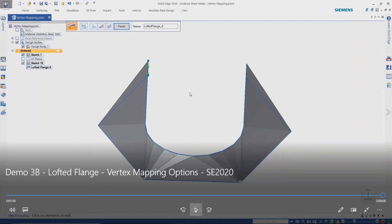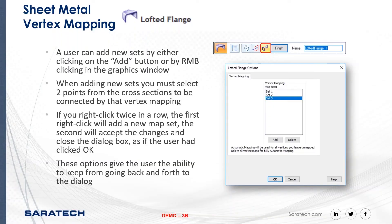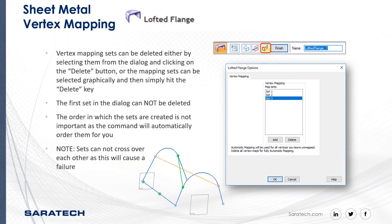The vertex mapping set can be deleted either by selecting it from the dialog or clicking the Delete button, as demonstrated in the video.